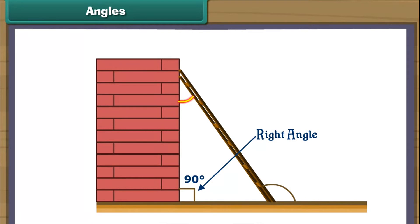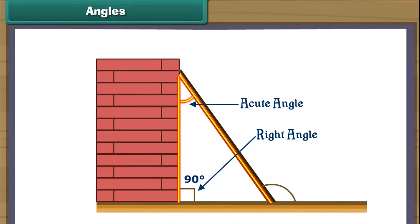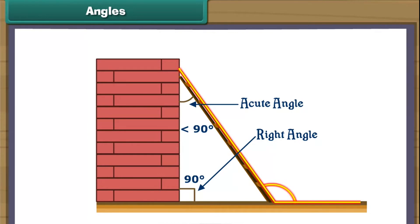Now consider the angle that the ladder makes with the wall. We take the wall as the base. The ladder is not vertical — it is tilted in. Such an angle is called an acute angle. Now let us look at the angle the ladder makes with the ground. The ladder is tilted out. Such an angle is called an obtuse angle, and its measure is more than 90 degrees.